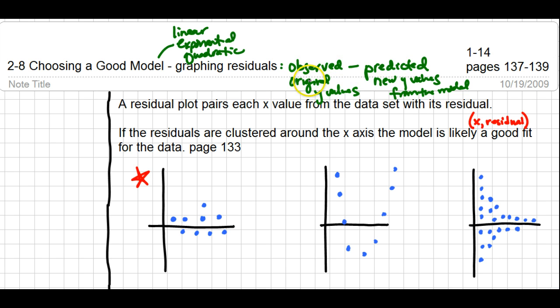The observed values are the original y values that we worked with, the data that were there in the original table. The predicted values are the new y values that you get after you plug in the original x's into the model or into the equation.